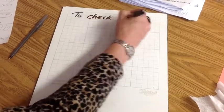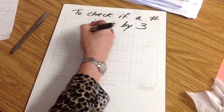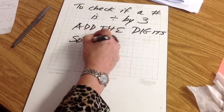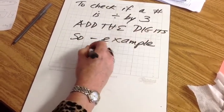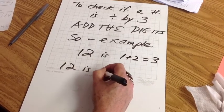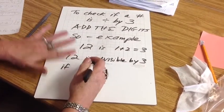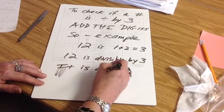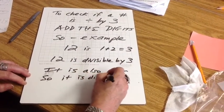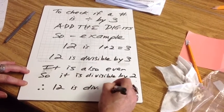If a number is divisible by three, add the digits. So example: 12 is 1 plus 2 equals 3, so 12 is divisible by 3. It is also even, so it is divisible by 2. Therefore, 12 is divisible by 6.